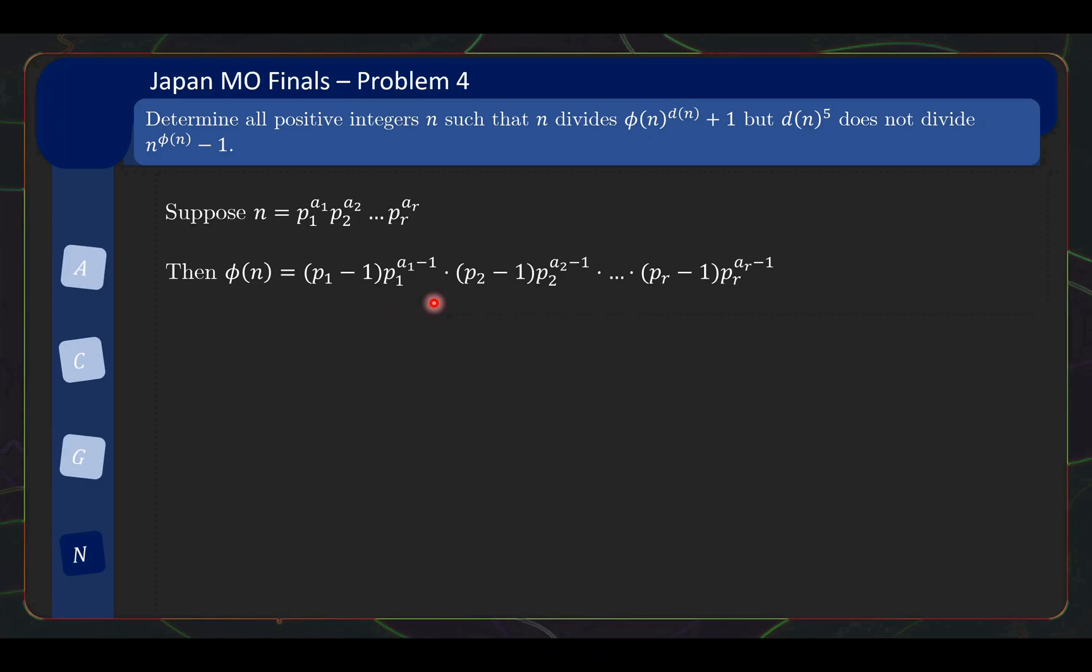That's φ(n), and d(n) is much simpler. d(n) is just basically the powers plus 1, and then you take the product. So that aside, let us now see how we can finally approach this problem.